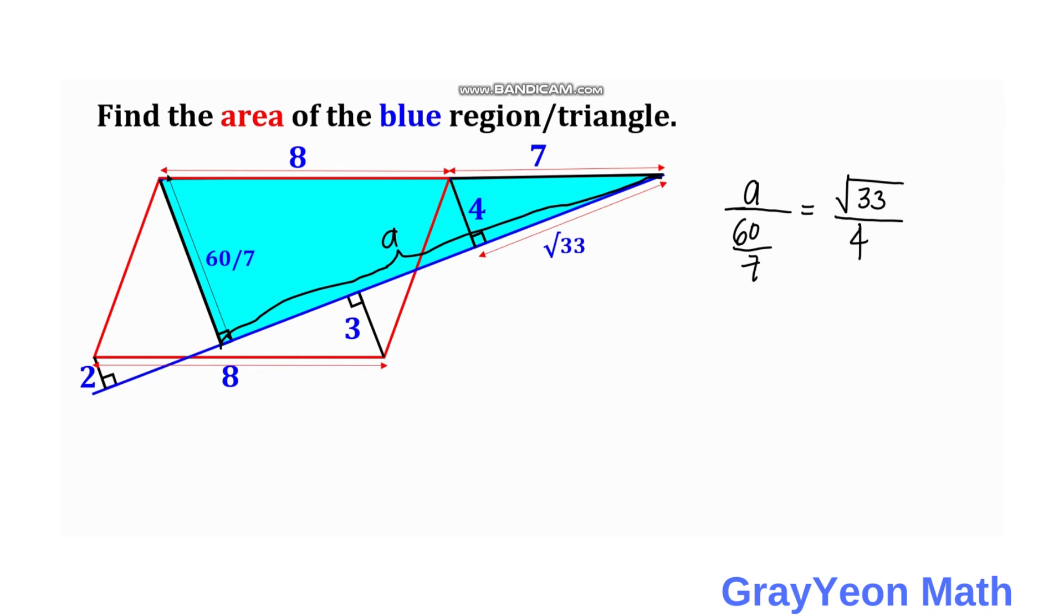So simplifying the left hand side, we have 7a over 60. 7a over 60 is equal to square root of 33 over 4. So we have a is equal to 60 over 7 times square root of 33 over 4.